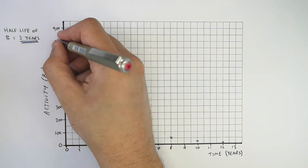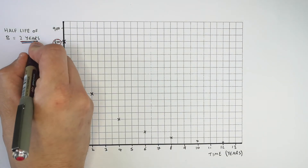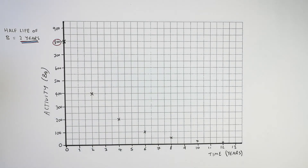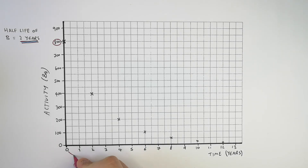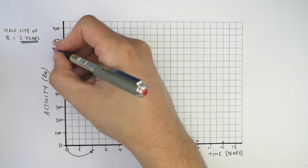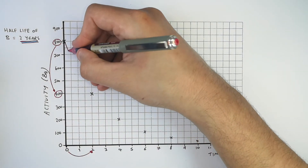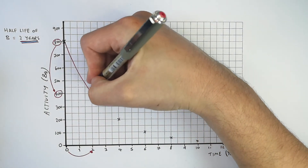So the half-life of this radioactive isotope is two years, which means every two years the activity is going to halve. Our radioactive sample starts off with an activity of 800 Becquerels. So after two years, the activity is going to halve from 800 Becquerels to 400 Becquerels — that takes two years, which is one half-life.